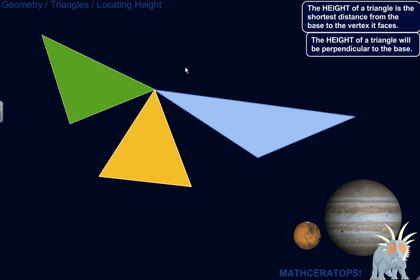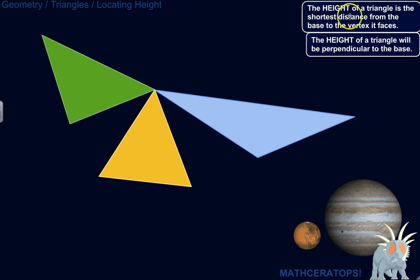Well, what does it mean? So, the height of a triangle is the shortest distance from the base to the vertex it faces. And by being the shortest distance, it'll necessarily be perpendicular to the base — it'll form a right angle.